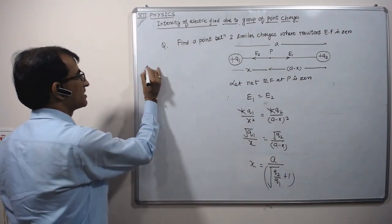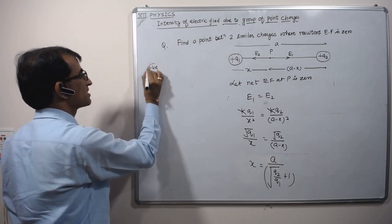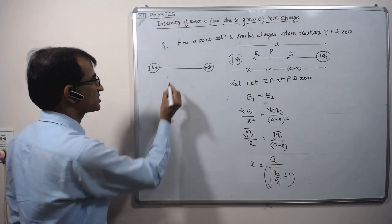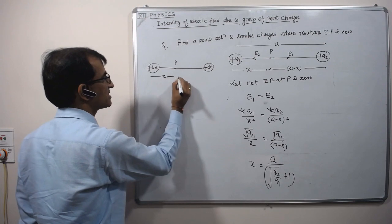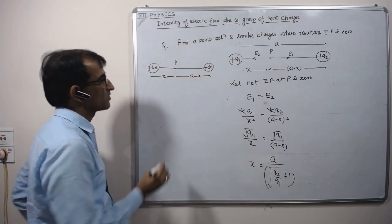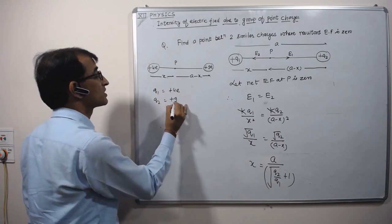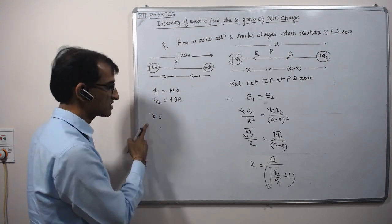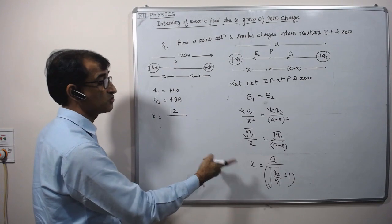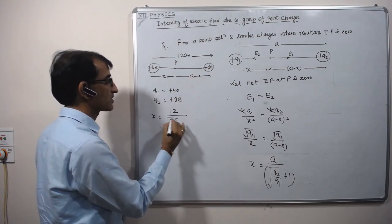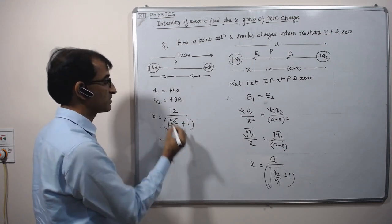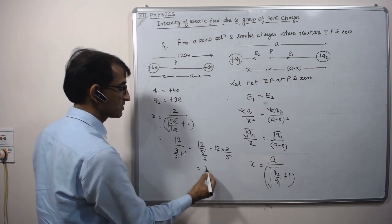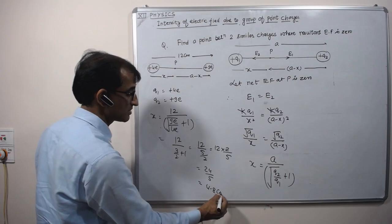Now, for example: two charges plus 4e and plus 9e, separated by 12 cm. Find a point where resultant electric field is zero. Let the point P be at distance x from the first charge. Using the formula x = a / (√(q2/q1) + 1): q1 = 4e, q2 = 9e, a = 12 cm. So x = 12 / (√(9e/4e) + 1) = 12 / (3/2 + 1) = 12 / (5/2) = 24/5 = 4.8 cm.